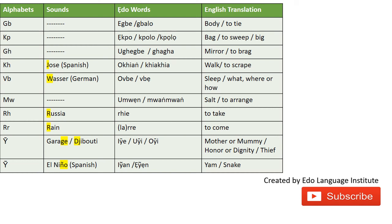Then the R sound: we have 'UREGBE' which means to brag or to boast. The word can be broken down — 'OKO' means look, and 'AGBE' means body, so 'UREGBE' is like a self-looking device, something you use to look at your body. That's the etymology of the word.